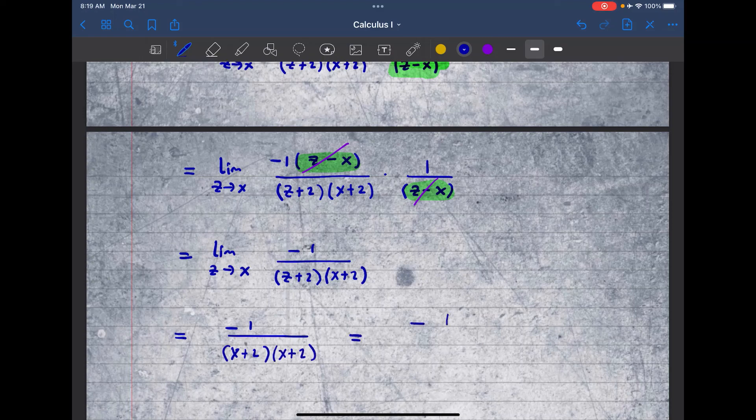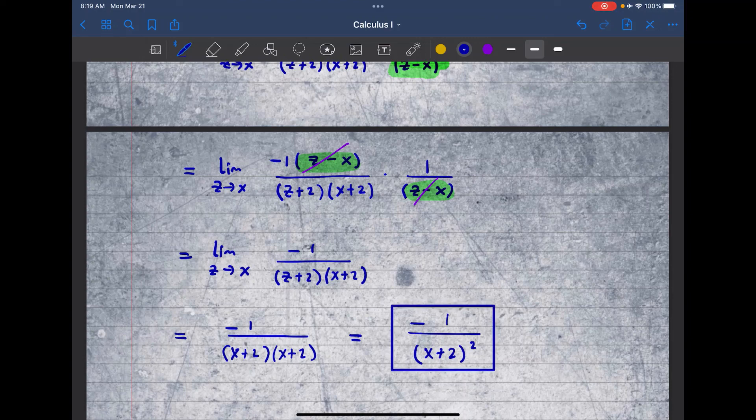And this simplifies to negative 1 over. So I have two factors of x plus 2 on the bottom. So that's (x plus 2) squared. So that is the derivative of this function by simply using the alternative form of the limit definition. I hope this makes sense. See you next time.